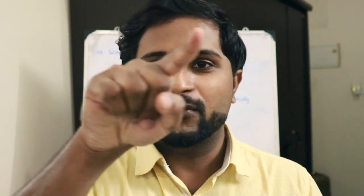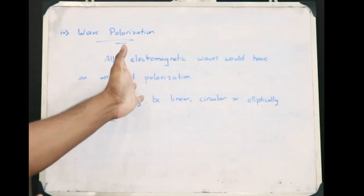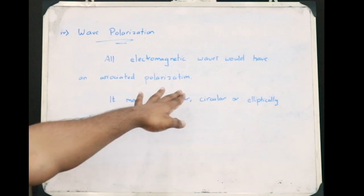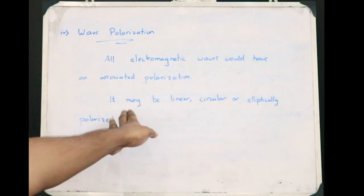The fourth parameter is wave polarization. All electromagnetic waves have a particular polarization — it might be linearly polarized, circularly polarized, or elliptically polarized. Linearly polarized means the electromagnetic wave simply moves in a straight line. Circularly polarized means the electromagnetic wave moves in a circle towards wherever it is going. Elliptically polarized means it moves in the shape of an ellipse. All electromagnetic waves have an associated polarization — linear, circular, or elliptical.